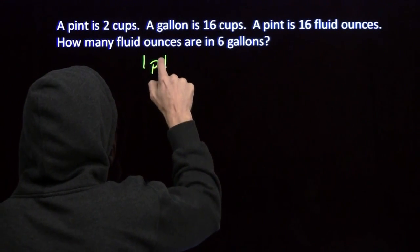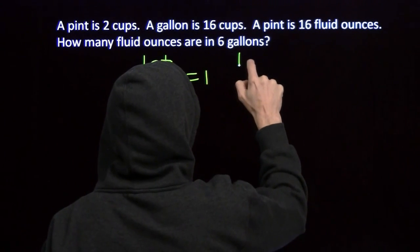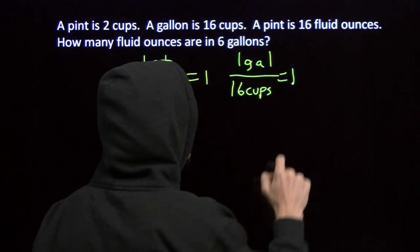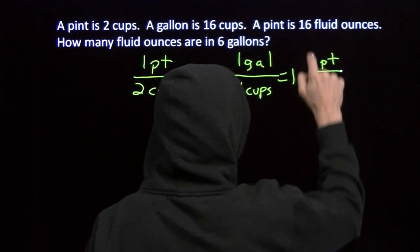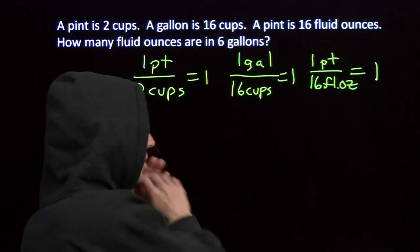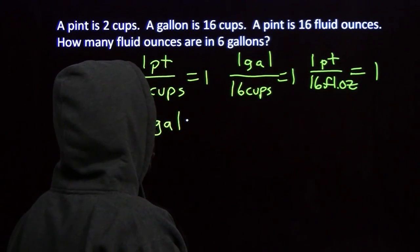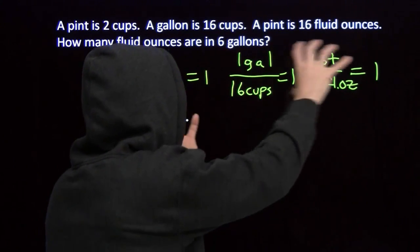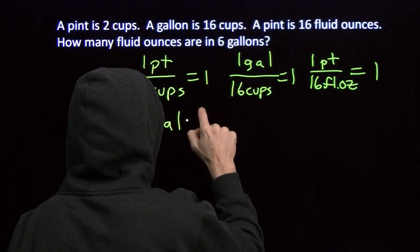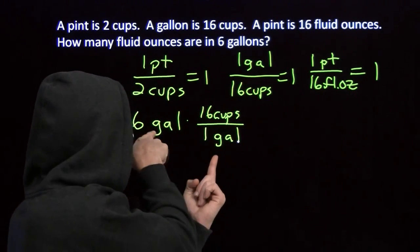I've got one pint to two cups — that's one. I've got one gallon to 16 cups — that's one. And one pint to 16 fluid ounces — that's one. I want to take these 6 gallons and convert to fluid ounces. I need to cancel out the gallons, so I'll flip the gallon-cups relationship and write it as 16 cups over 1 gallon, putting the gallon in the denominator where it will cancel.